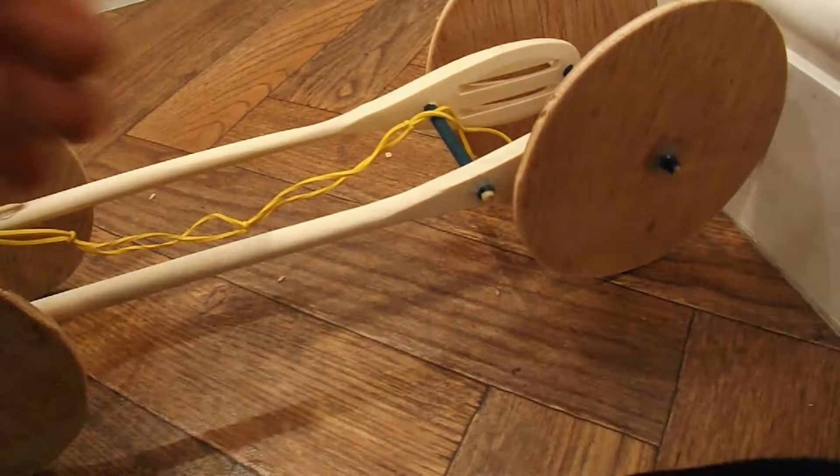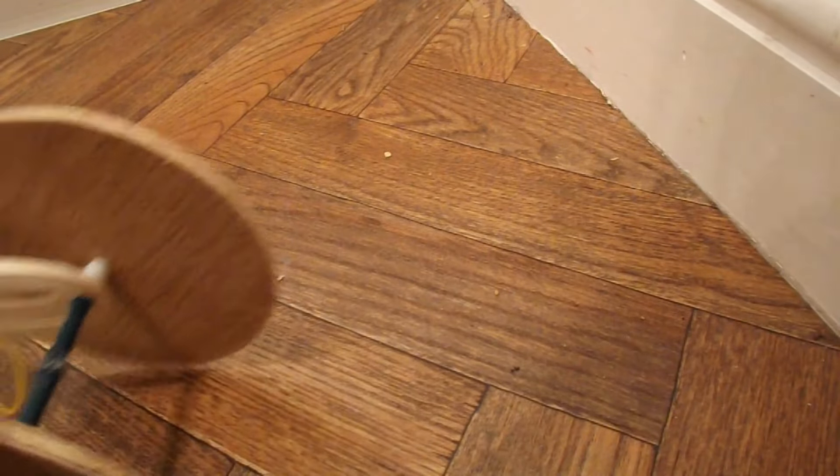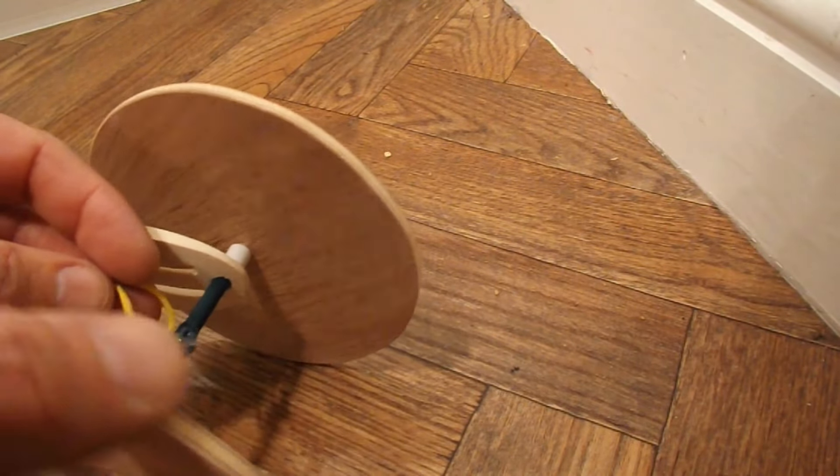Just need to put a bit of rubber band around there and a hook on the back axle and we can go and do a test run. Rubber band attached, just wind it up, connect it onto that hook.